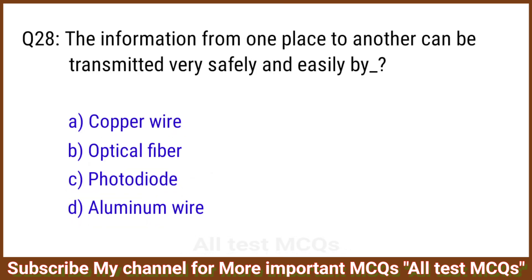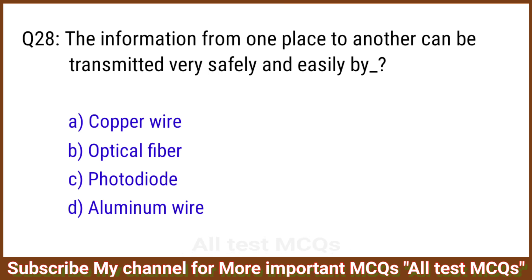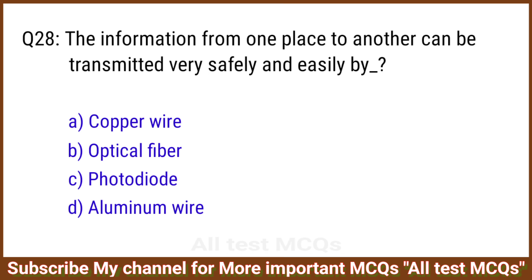Q28. The information from one place to another can be transmitted very safely and easily by? The right answer is option B: Optical fiber.